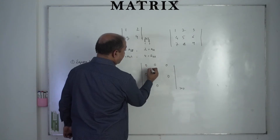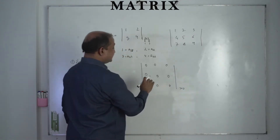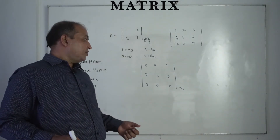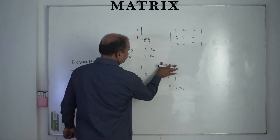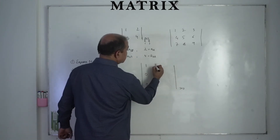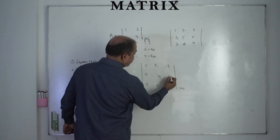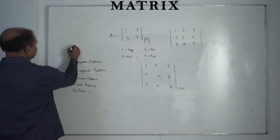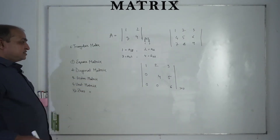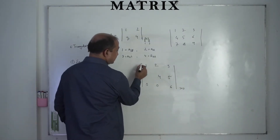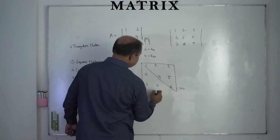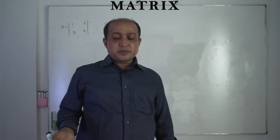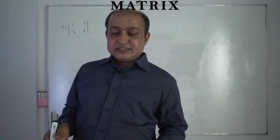When all the elements of a matrix, including diagonal elements, are zero, that is called the zero matrix. Now, if we write elements like 1, 2, 3, 4, 5 in a triangular arrangement, this is called the triangular matrix. There are two triangular matrices — upper triangular and lower triangular. A matrix has its own operations.